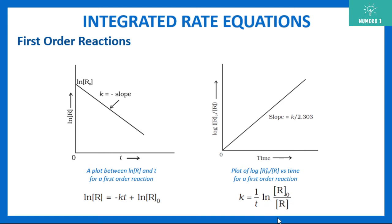If you plot ln(R naught / R) on y-axis and time on x-axis, then y equals k times t, so slope is k. But when using log base 10 instead, the slope becomes k divided by 2.303. The reason 2.303 appears is that ln is log to base e (natural logarithm), while log here refers to log to base 10. To convert between them, this factor comes in. So note: ln is natural logarithm and log is log to base 10.